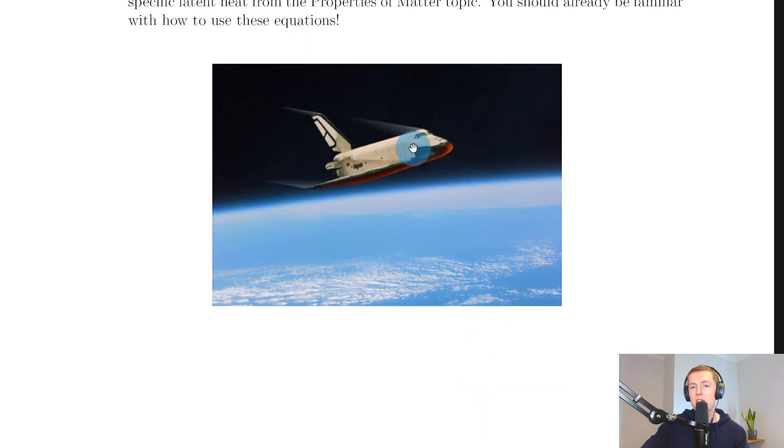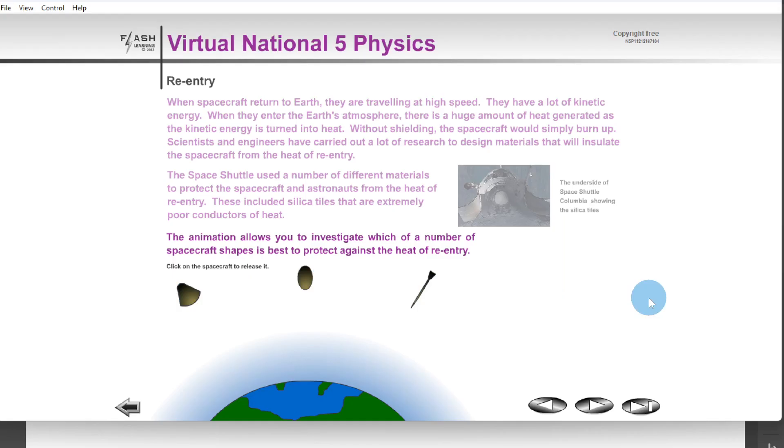If you look at the spacecraft here, it's undergoing re-entry into the Earth's atmosphere and the heatproof tiles or heat shielding material on the underside of the spacecraft is glowing red hot. We can also think about how the shape of the spacecraft will affect how much it's going to burn up on re-entry. We can use this simulation to investigate which spacecraft shape is best to protect against the heat of re-entry.